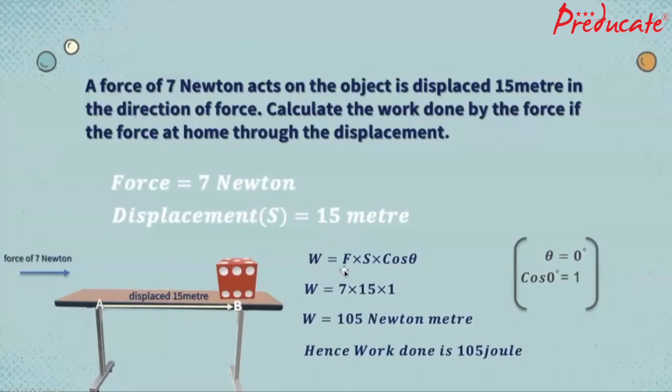Work done is equal to force into displacement into cos theta. Here theta is zero degree, and cos zero degree is 1, which is equal to 7 into 15 into 1.